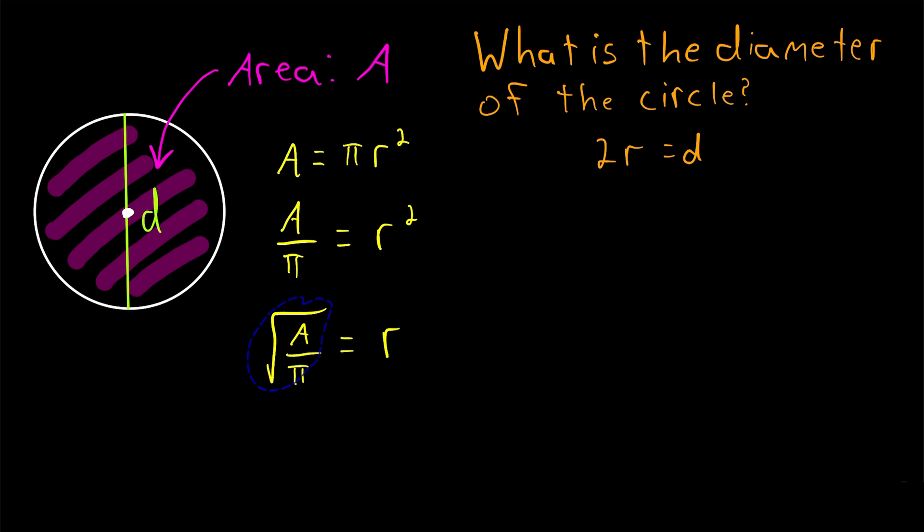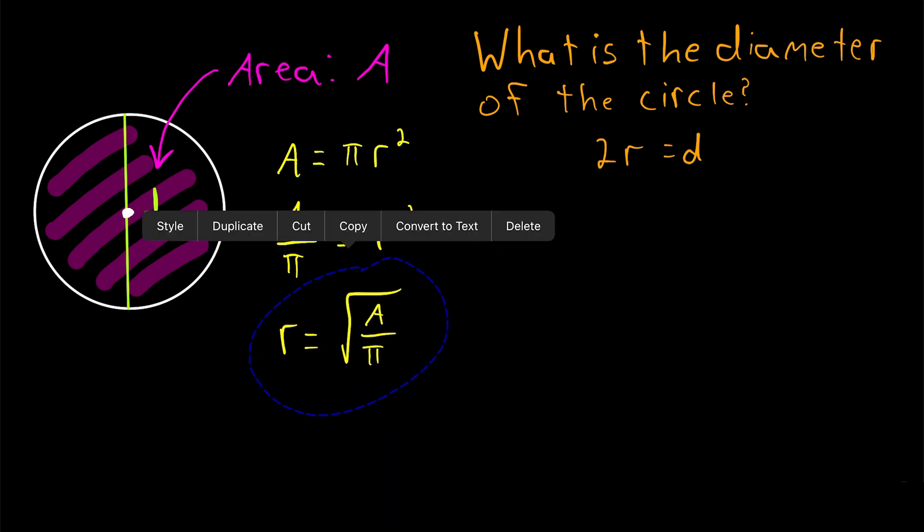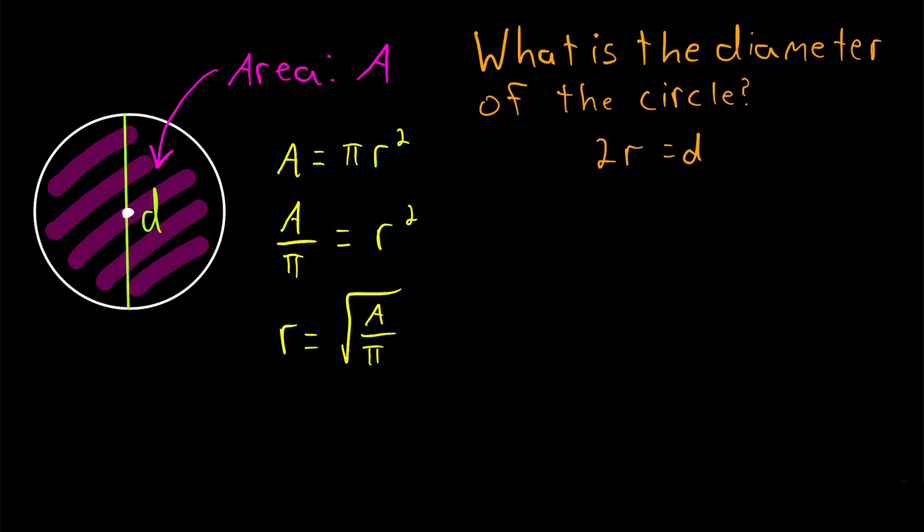And then I prefer, and many of you probably also prefer, to put r on the left side of the equation. So just move that stuff around. So the radius of the circle is equal to the square root of the area divided by pi.